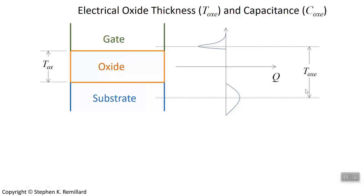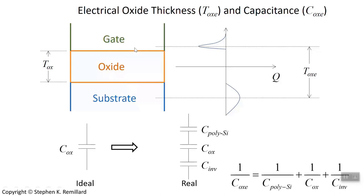And then C sub OXE is the resulting capacitance. An ideal capacitor is what it is. But the MOS capacitor includes then extra capacitance from the inversion layer and from the gate, which is probably polycrystalline silicon. And they're in series. So use the series combination of three capacitances. So the capacitance of the polysilicon and the capacitance of the inversion layer should be added in their one-over form to the actual oxide capacitance that becomes significant when the oxide layer gets very thin.